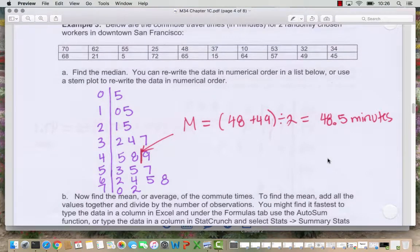Example 3 gives commute times for randomly chosen workers in downtown San Francisco. And so again we want to find the median. So we start with a stem plot. And so in this stem plot we have decided to put the ones value in the leaf and the tens value in the stem. So our stems go from zero to seven. So this value here the person who had a five minute commute has zero in the tens place and five in the ones place. So here again we have an even number of data points.